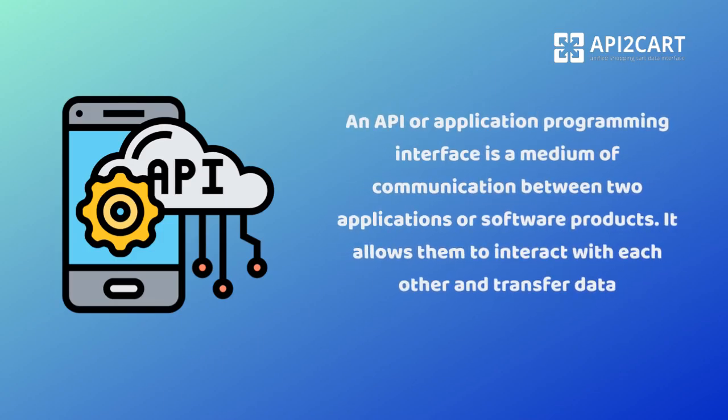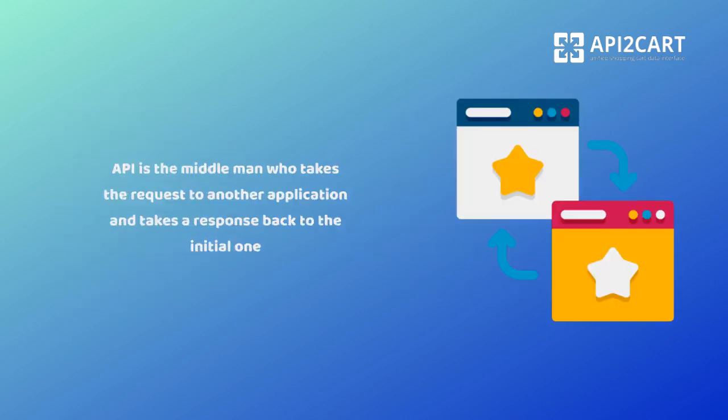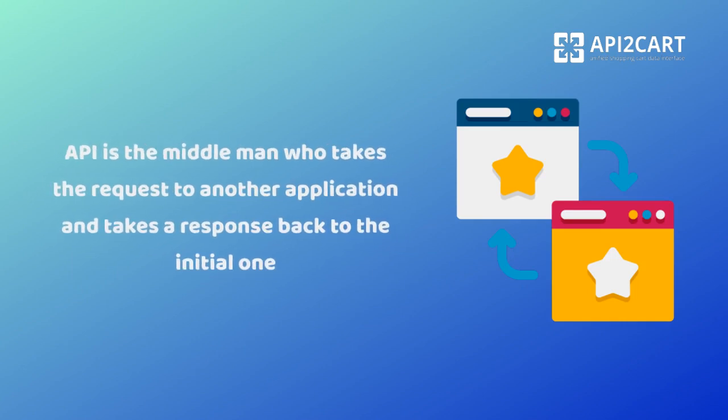An API, or Application Programming Interface, is a medium of communication between two applications or software products. It allows them to interact with each other and transfer data. API is the middleman who takes the request to another application and takes a response back to the initial one.